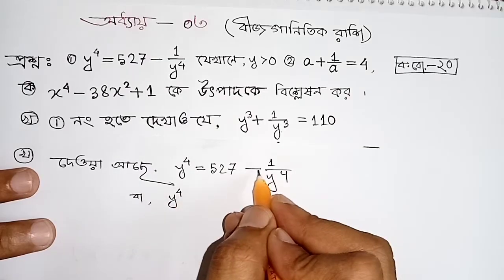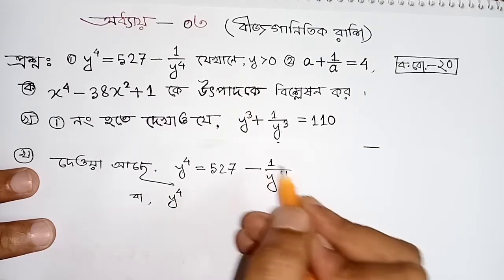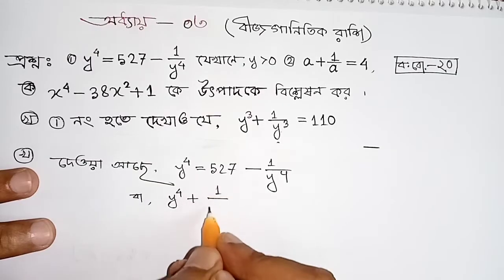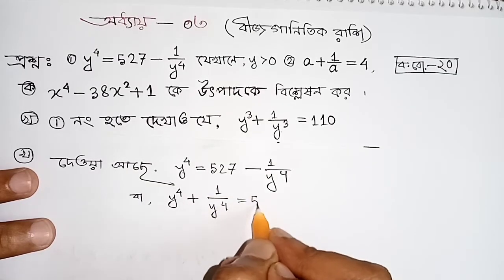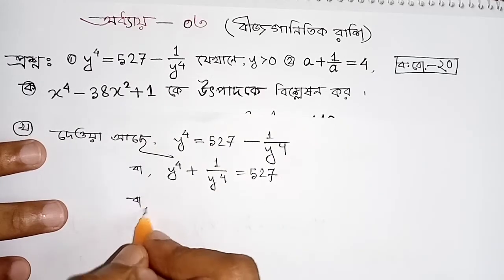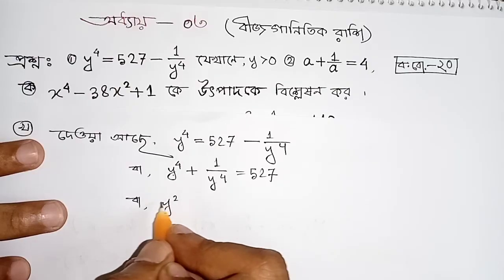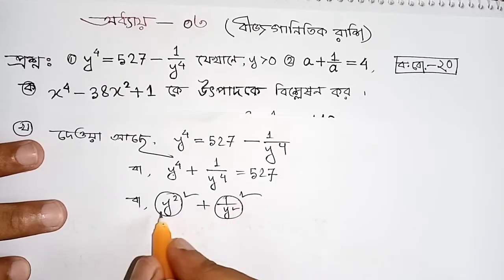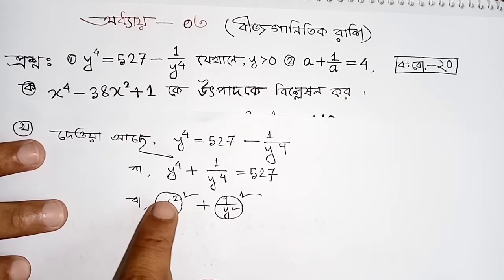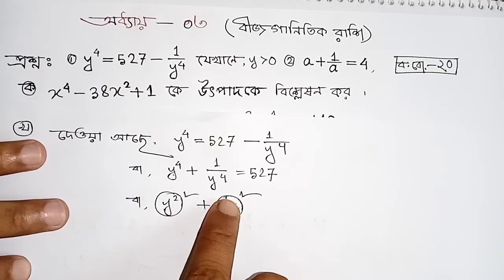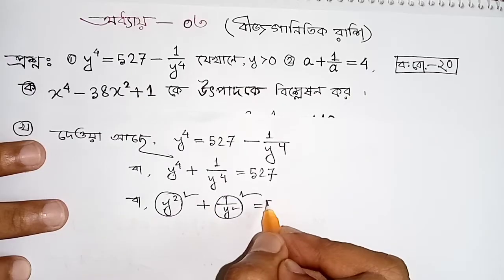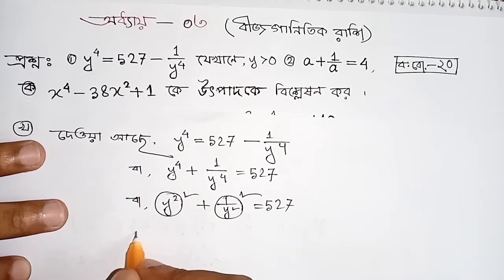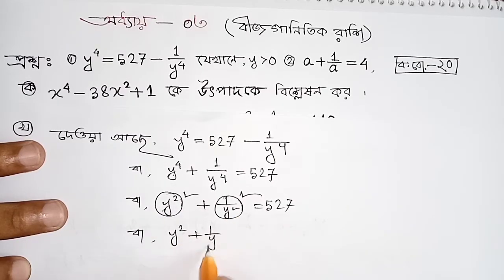y to the power 4, eta, 1 by y to the power 4 is minus 1 by y to the power 4. Working with y to the power 4 minus 1 by y to the power 4 in brackets.